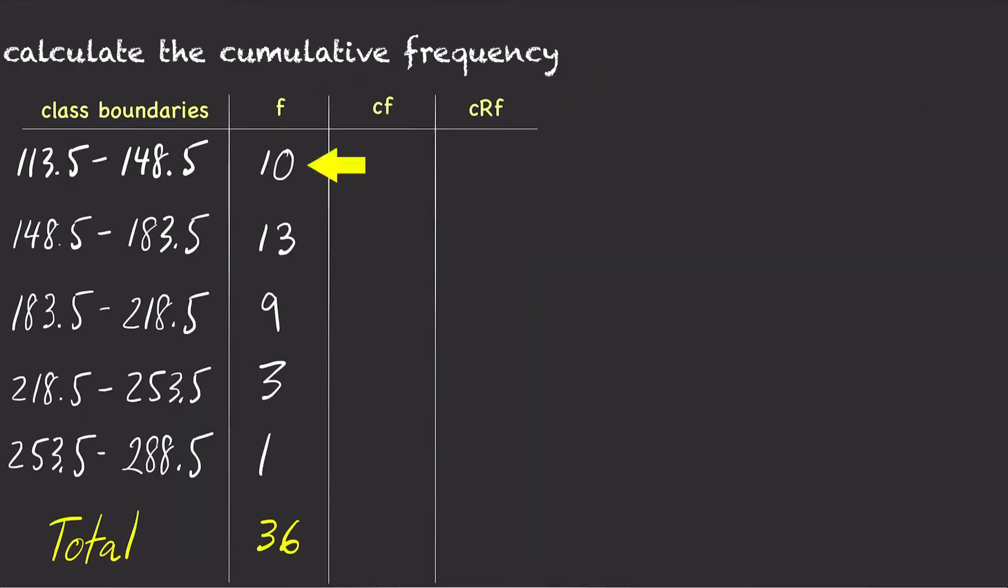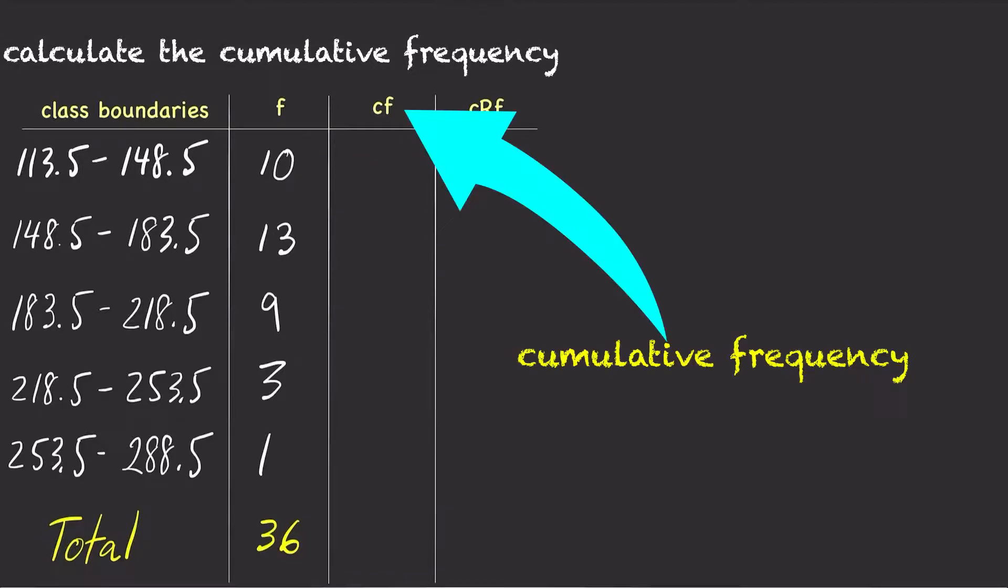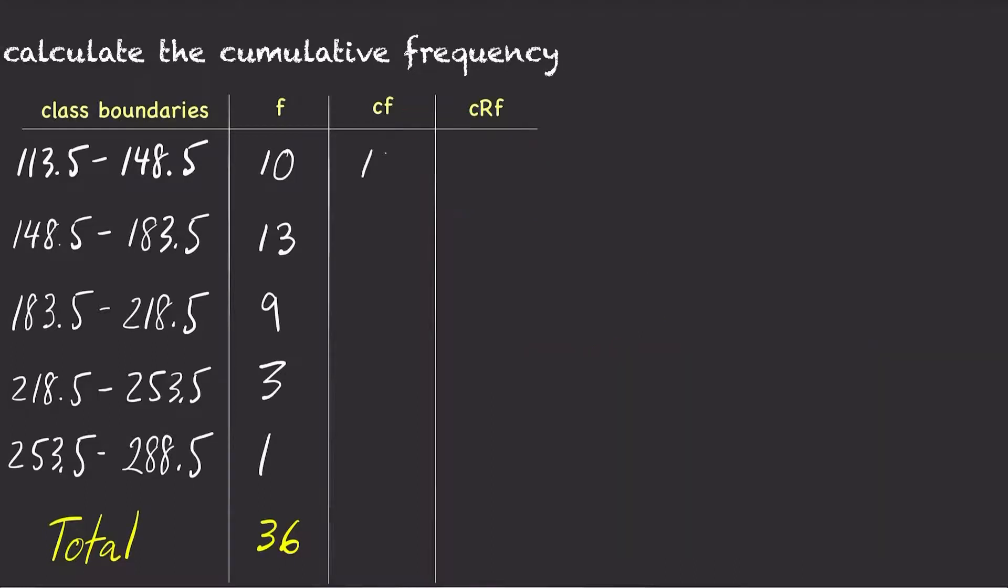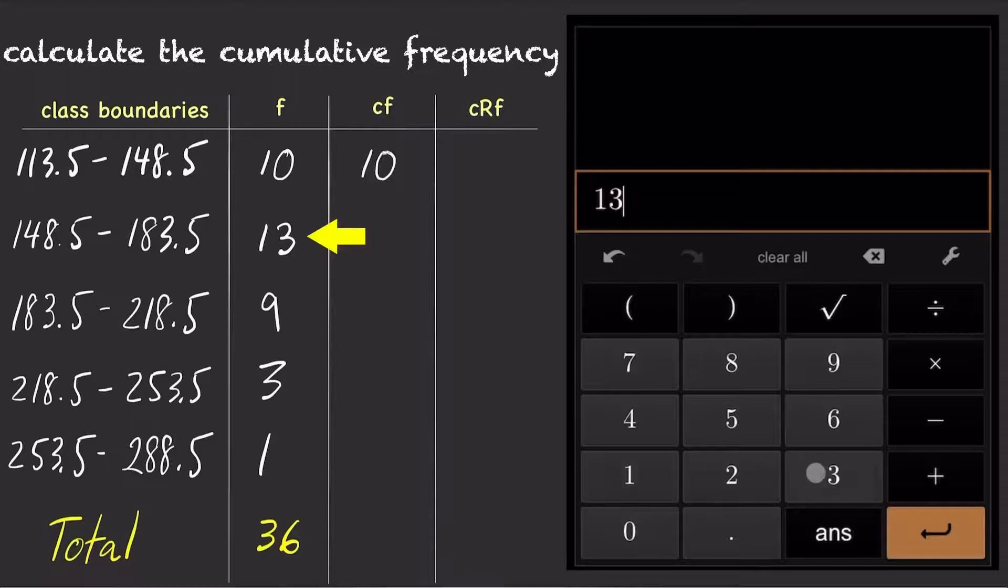For the first class, the frequency is 10 and there are no other classes before it, so the cumulative frequency is 10. But for the second class, the frequency is 13 plus all the frequencies for every class before it. So the cumulative frequency is 13 plus 10 equals 23.